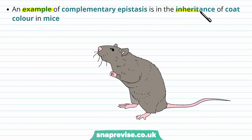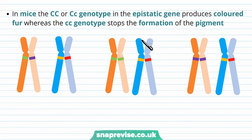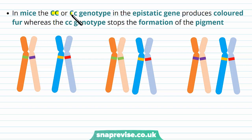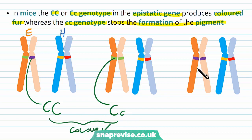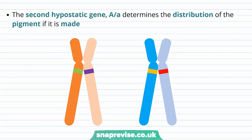An example of complementary epistasis is in the inheritance of coat colour in mice. The epistatic gene C (capital C, capital C, or capital C, little c) produces coloured fur, whereas the homozygous little c genotype stops the formation of any pigment. The second gene A (or little a) — the hypostatic gene — determines the distribution of this pigment if it gets made. So if the epistatic gene allows pigment, it goes on to choose which of these is expressed and encourages a particular colour.